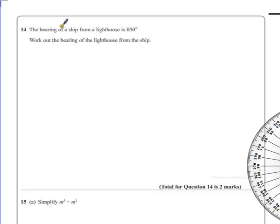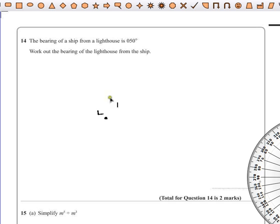So first off, we say the bearing of a ship from a lighthouse. So we have our starting point, and this I'm going to call L for my lighthouse. Now to find a bearing of anything, we need to know where north is. Because we're not specified this, we can draw it on ourselves.